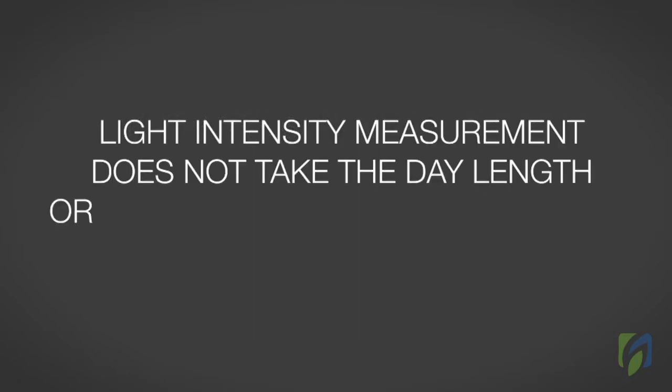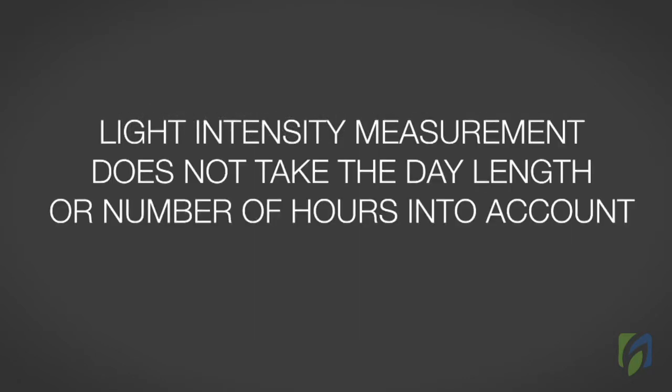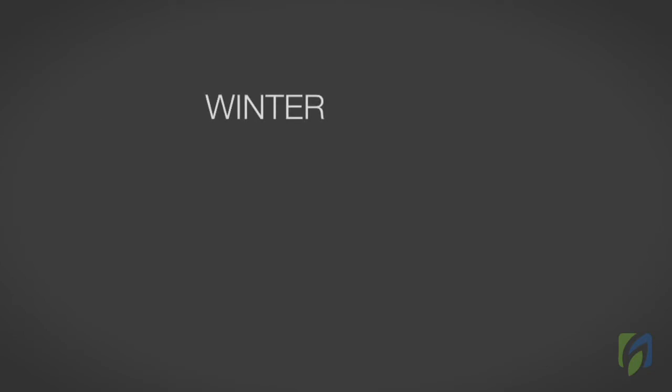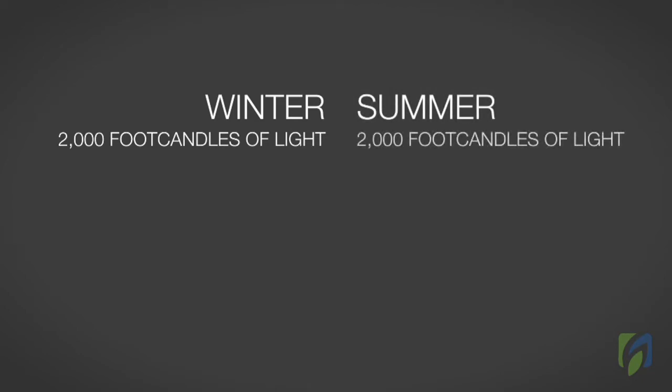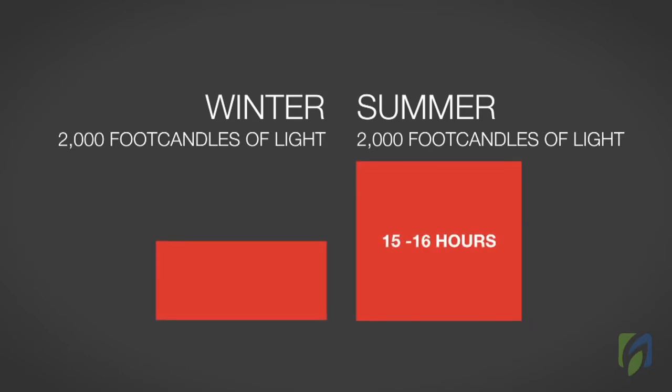A single light intensity measurement does not take the day length or number of hours of sunlight into account. For example, in the northern hemisphere, if a crop receives 2,000 foot candles of light during the winter and 2,000 foot candles of light during the summer, the total amount of light, or DLI, received by the summer crop is considerably higher than the winter crop. The reason is, the summer crop receives 15 to 16 hours of sunlight, while the winter crop receives only 8 to 9 hours.